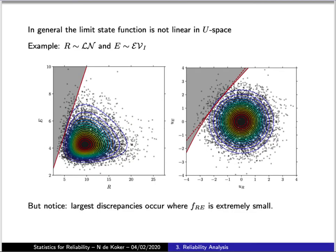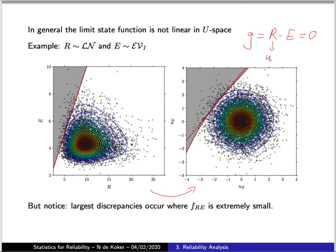What is the effect of our original random variables having distributions other than normal? Suppose the resistance variable is log-normally distributed and the loading variable has a Gumbel distribution. The first effect is that when we transform to standard normal space, our linear expression for the performance function — and therefore the limit state line — is no longer linear, because the transformations from R to U_R and from E to U_E are not linear transformations. The result is that what was a straight line in physical space becomes a curved line in standard normal space.